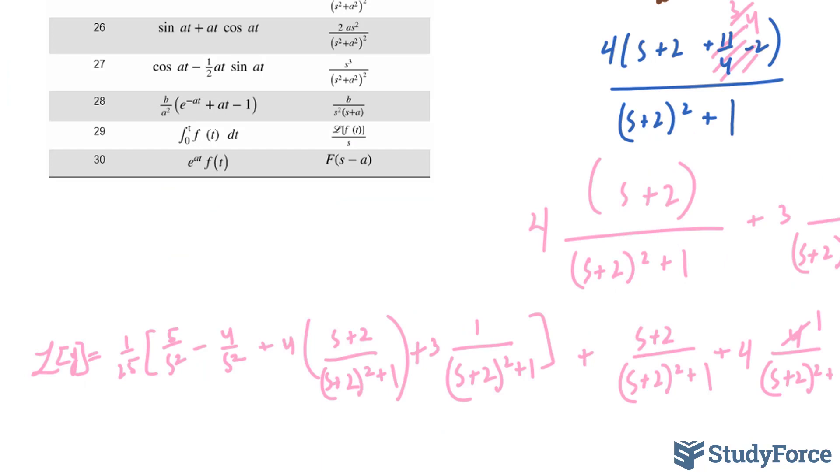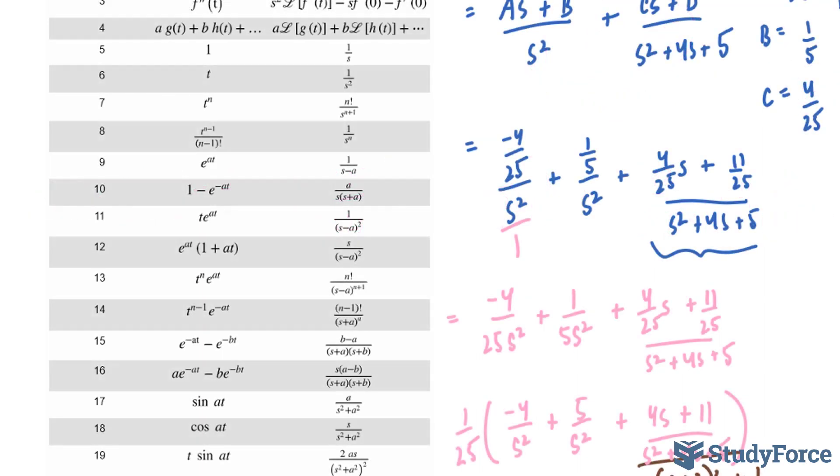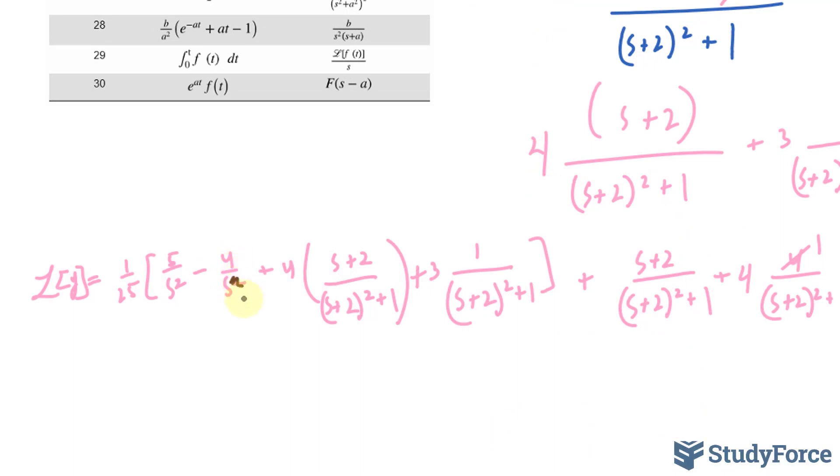And now we can transform each of these terms. But I made a mistake earlier. Back here, this should have been s. So when I divided these two, we should have only had 1/s. So this should have been -4/s. Because of that, we should end up with -4 as its inverse. This should be 5t plus, this should become 4 times e^(-2t) cos t. This inverses into the following expression, e^(-2t) sin t.